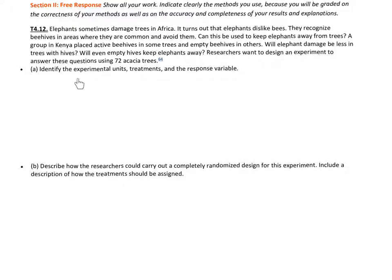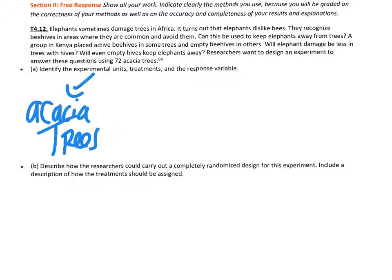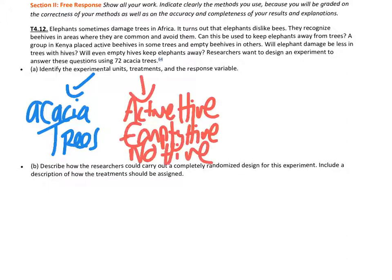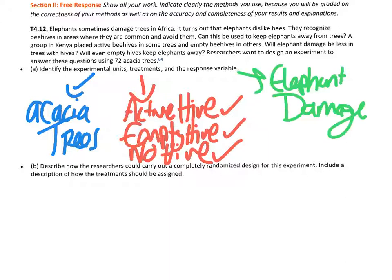Part A: Identify the experimental units, treatments, and the response variable. The experimental units are the acacia trees. There are three treatments: either an active hive, an empty hive, or no hive. The response variable is the damage done by the elephants to the trees.